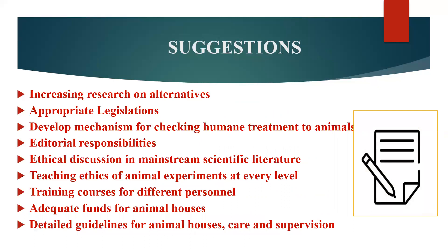The suggestions given by the committee include increasing research on alternatives if alternatives are available, appropriate legislation, developing mechanisms for checking humane treatment of animals, editorial responsibility, ethical discussion in mainstream scientific literature, teaching ethics of animal experimentation at every level, training courses for different personnel, adequate funds for animal houses, and detailed guidelines for animal house care and supervision.